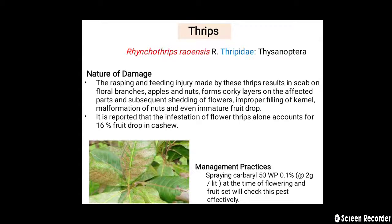Even immature fruit drop occurs. It is reported that infestation of flower thrips alone accounts for 16% fruit drop in cashew nut. For management, spraying carbaryl 50WP at 0.1% concentration at the rate of 2 grams per liter at the time of flowering and fruit set will check this pest effectively. These are the major pests of cashew nut. Thank you.